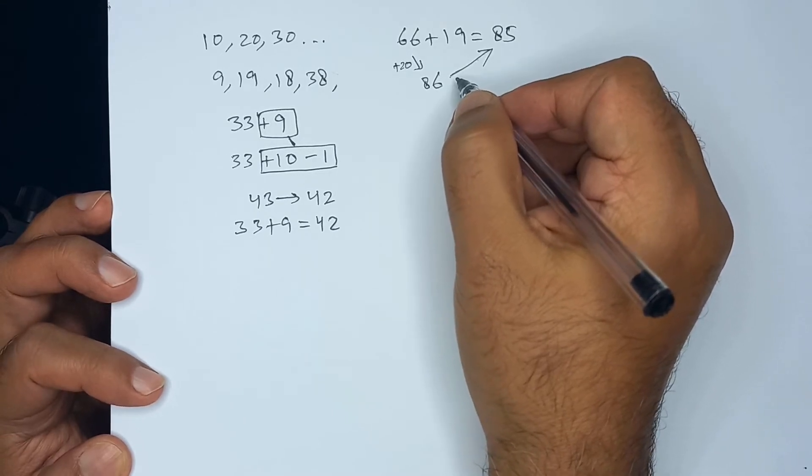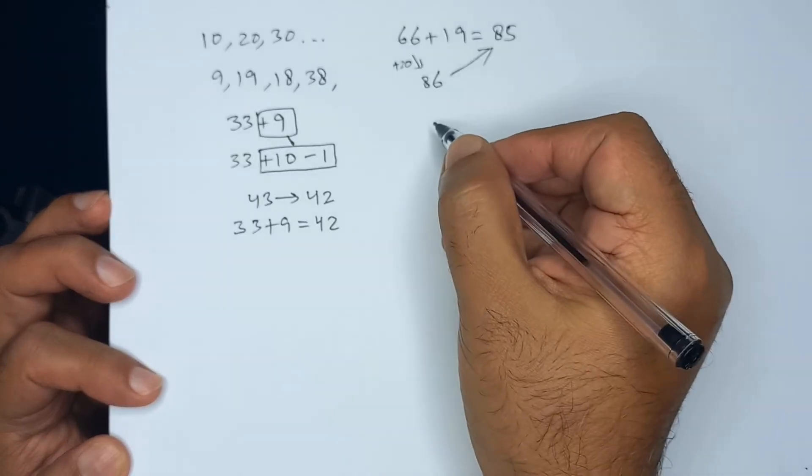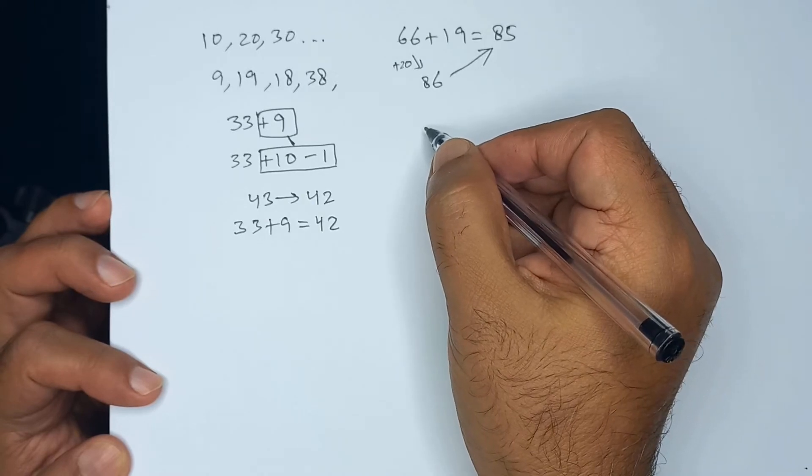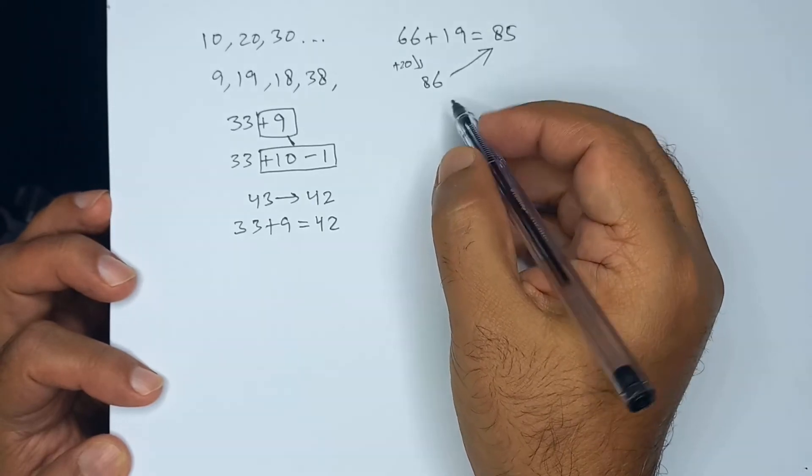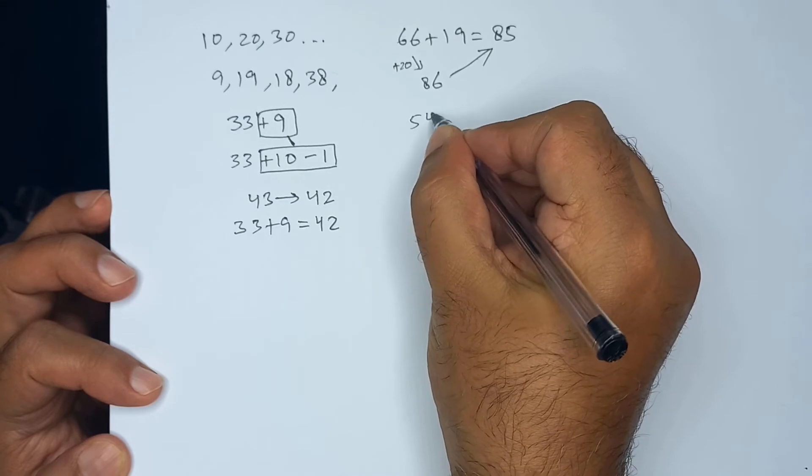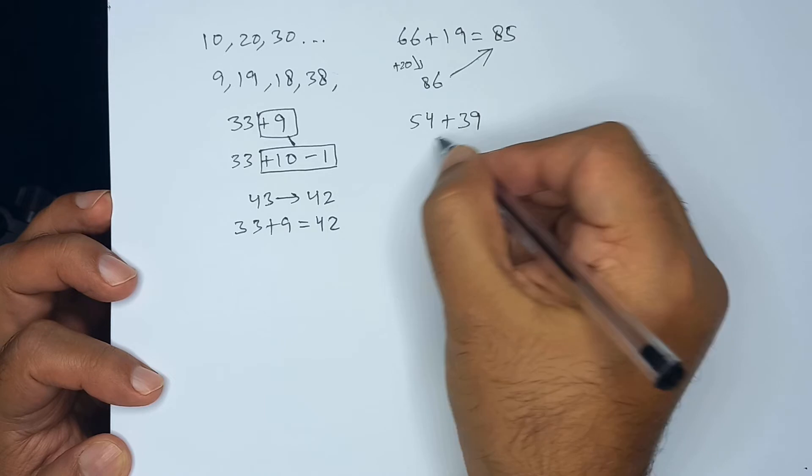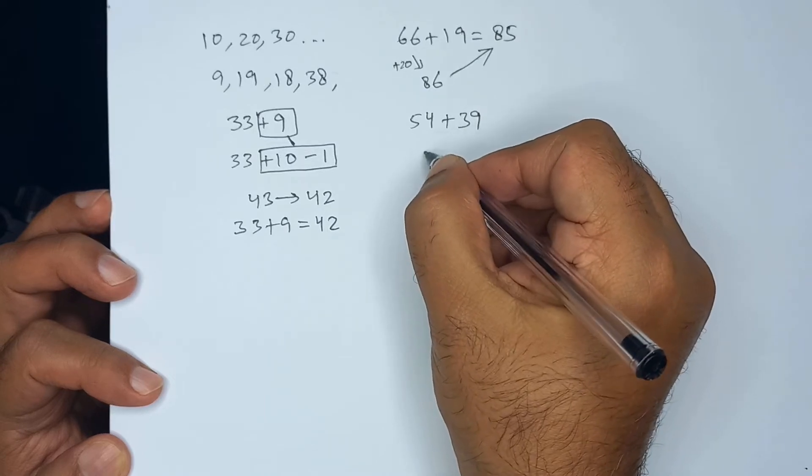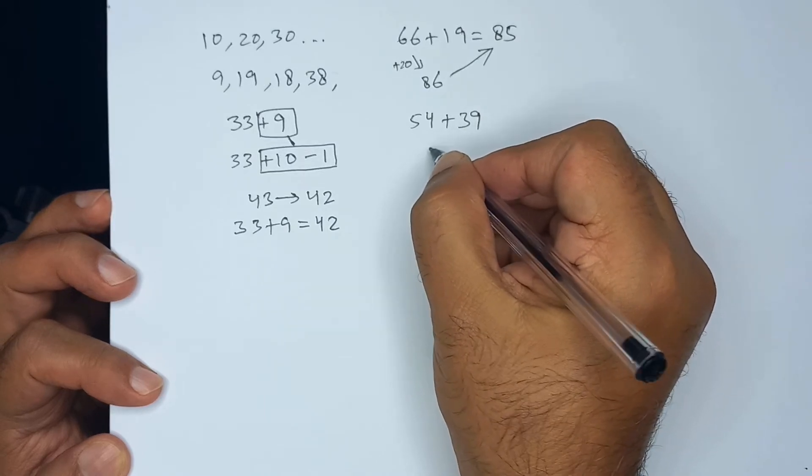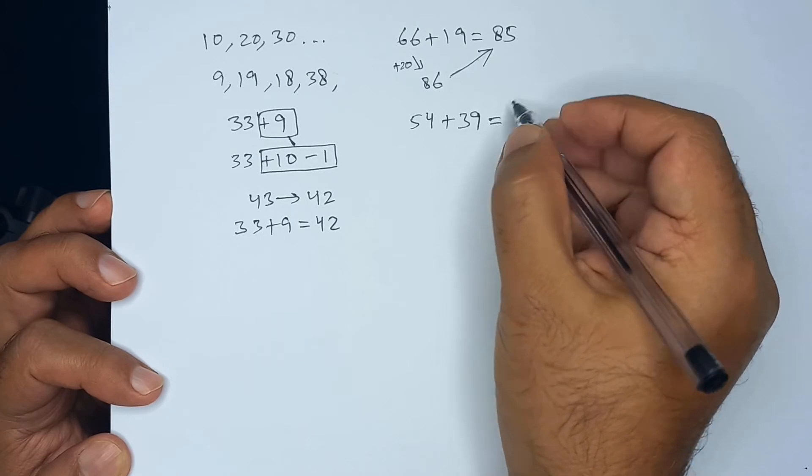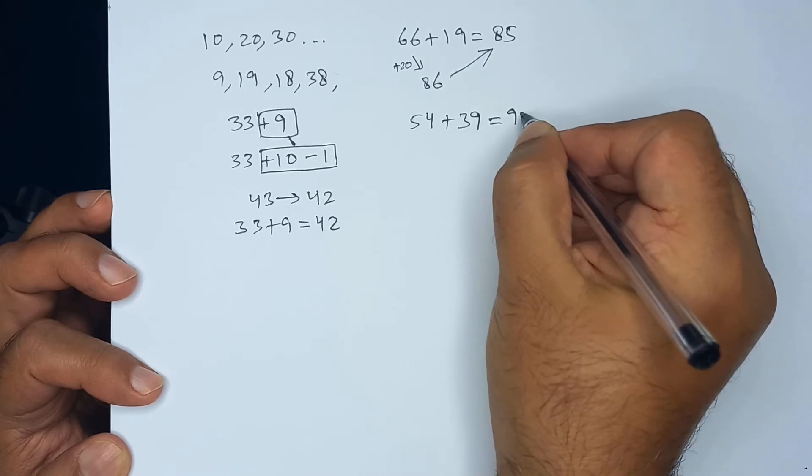Now, let's do a couple of more examples to find, let's say, 54 plus 39. We could add 40 to 54 to get 94 and then taking 1 away will give us 93.